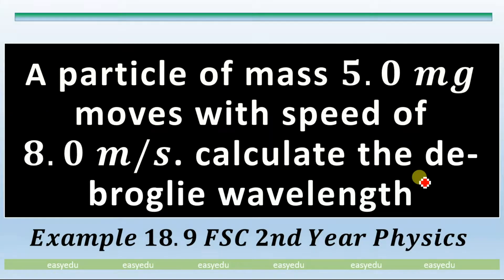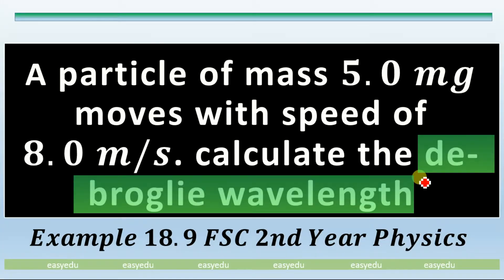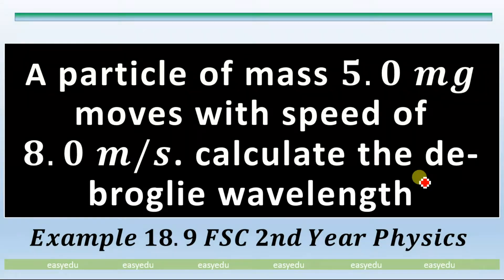We will determine the de Broglie wavelength. The de Broglie hypothesis tells us about the wave nature of particles. Whenever there is a particle and that particle is moving with certain velocity, there are waves associated with that particle.